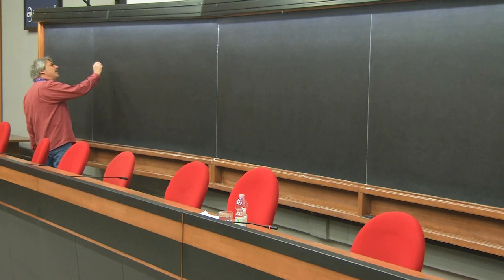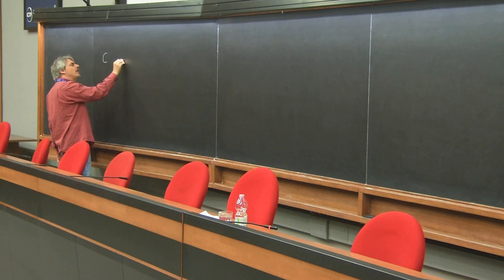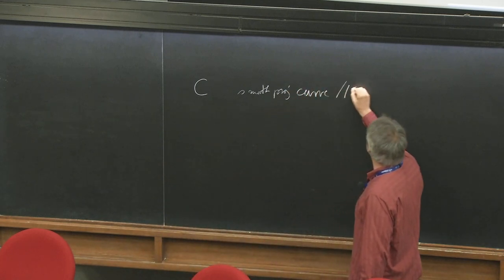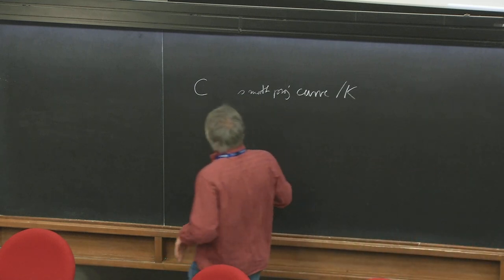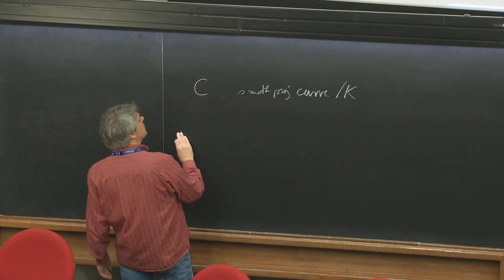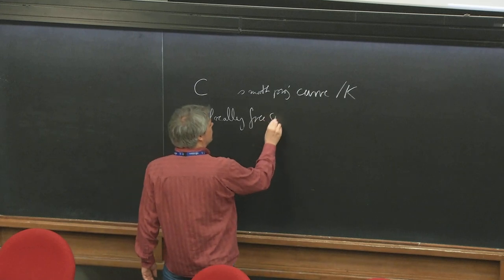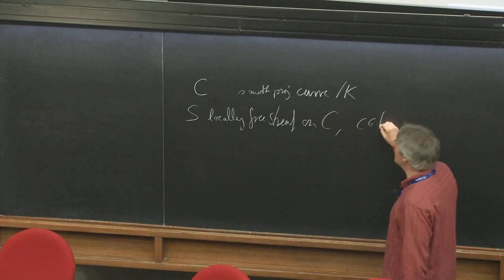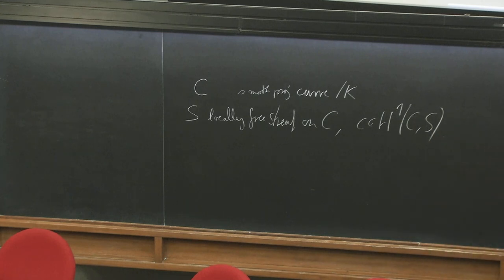So what are we dealing with? Let's remind ourselves of our situation. We have a smooth projective curve over a field K — or if necessary, we go to the algebraic closure of the field. We have a locally free sheaf on C, and we have a cohomology class; there's only the first cohomology.